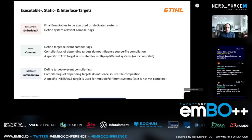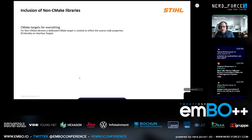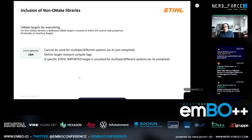For non-CMake libraries, we create dedicated CMake targets wherever possible — preferably an interface target. If that's not possible we have to use multiple static imported libraries when something is pre-compiled already, but we try to avoid static imported libraries and prefer raw source code.